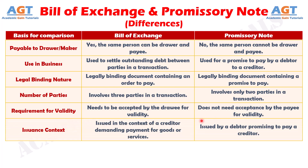Number fourteen: A Bill of Exchange is issued in the context of a creditor demanding payment for goods or services, whereas a Promissory Note is issued by a debtor promising to pay a creditor.